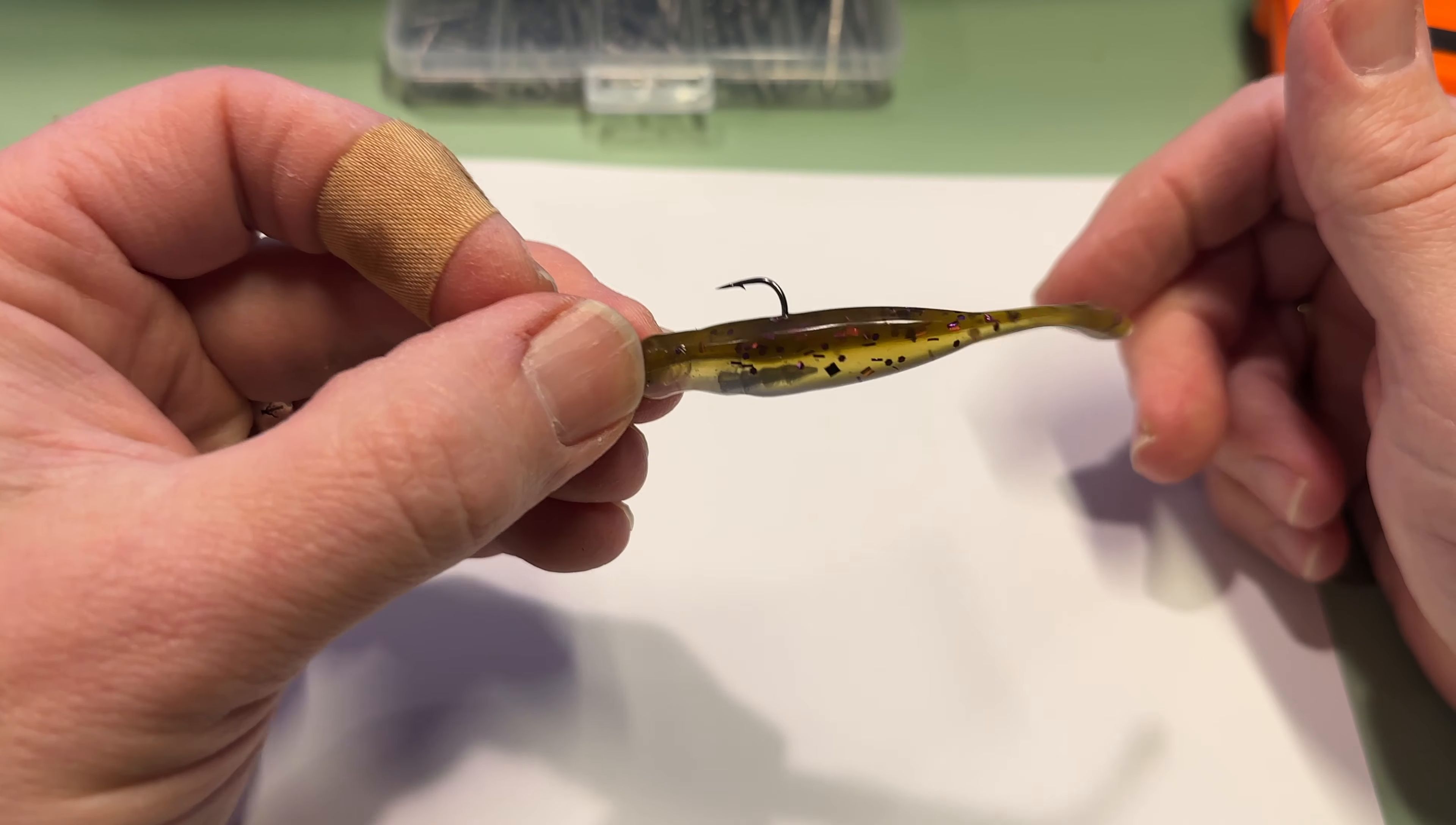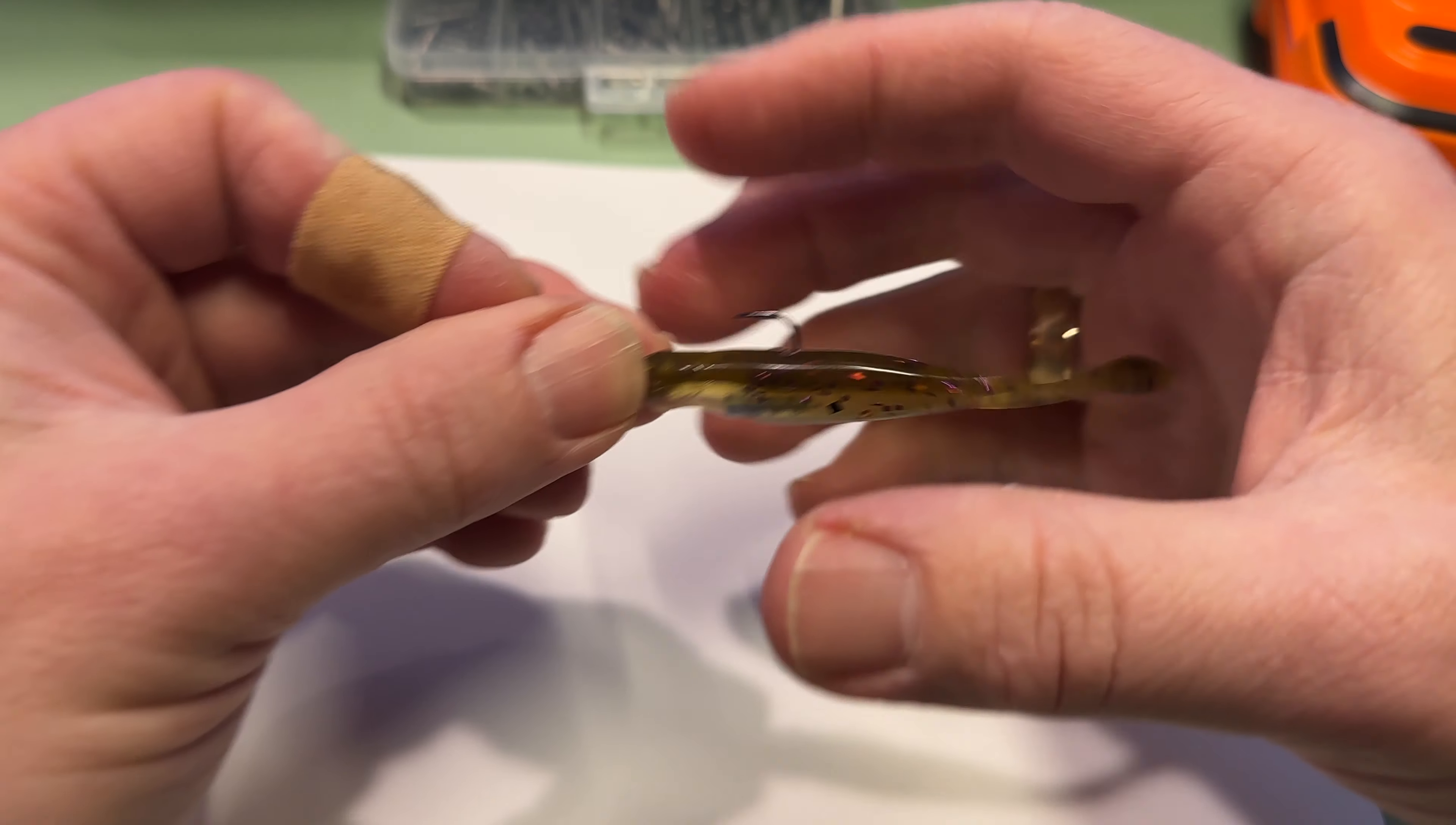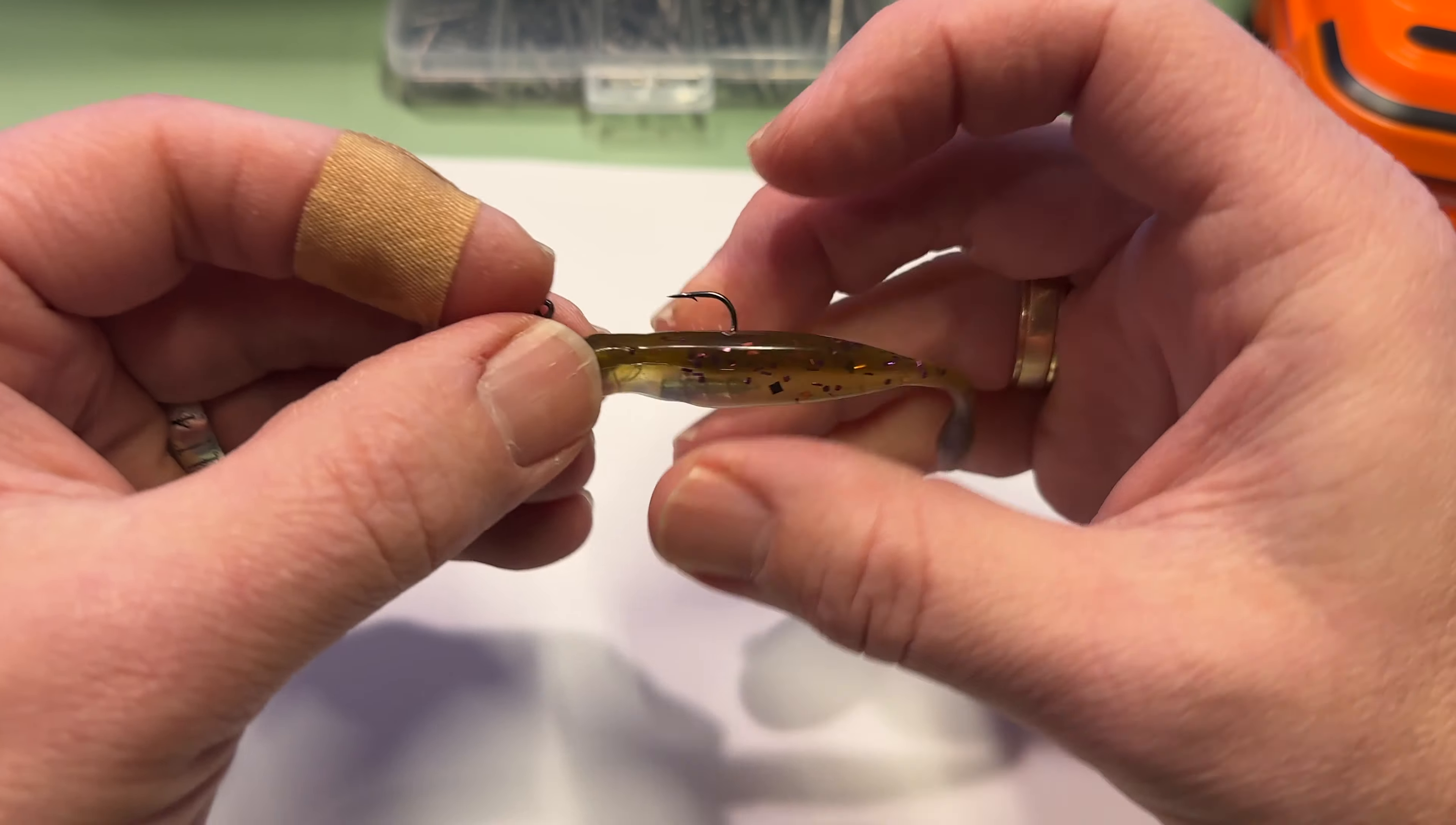And then you fish it as slow as possible. You don't jig it. You don't pull it and then let it drop, then pull it and let it drop. You just reel it just like that. And then the fish will grab it. And you might not even feel them grab it until you feel some kind of tension. And then you got to cross their eyes, a.k.a. set the hook.